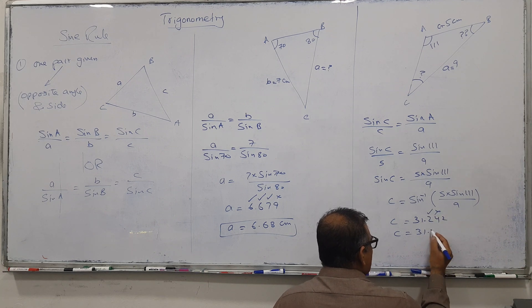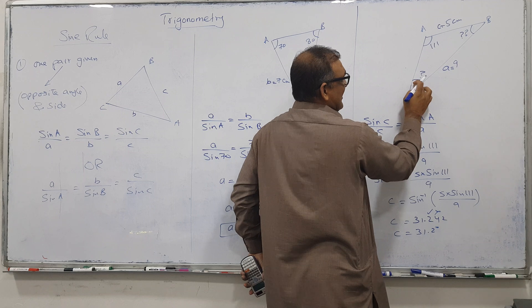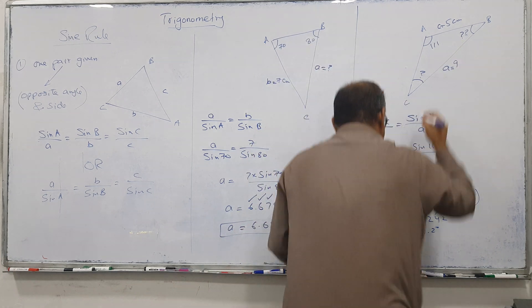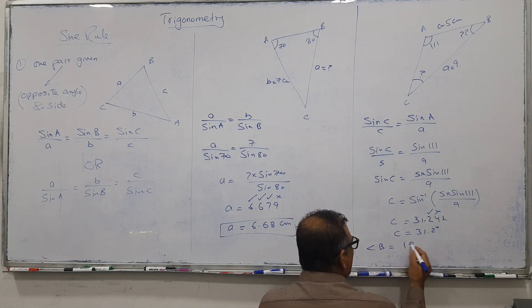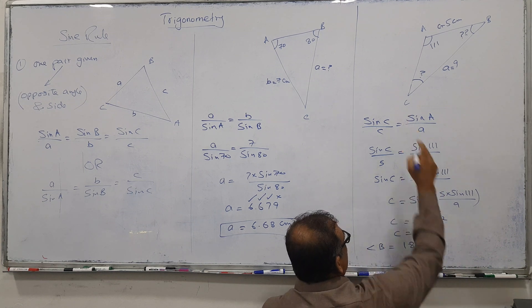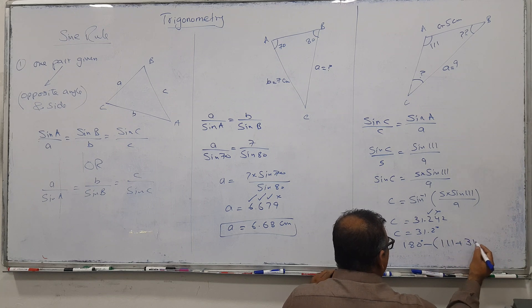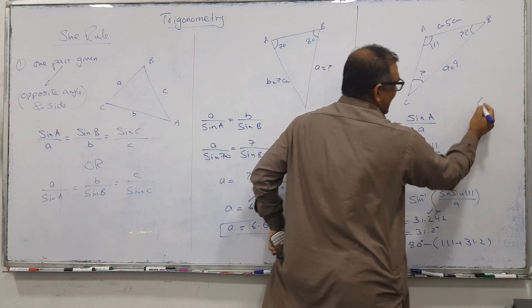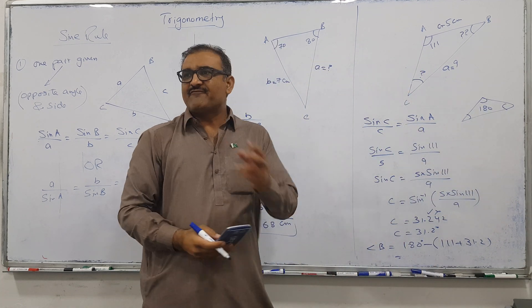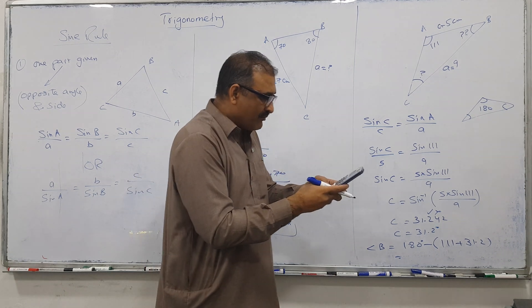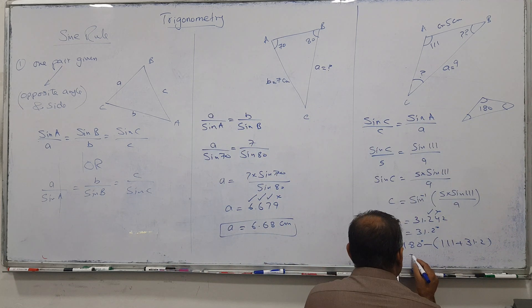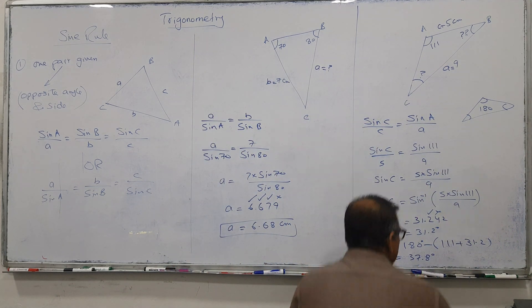So angle C is 31.2°. Now I have two angles and can find the third. Angle B equals 180° minus angle A minus angle C. Angle A is 111° and angle C is 31.2°. So angle B equals 180 minus 111 minus 31.2, which gives 37.8°. That is our answer.